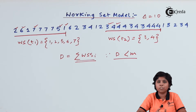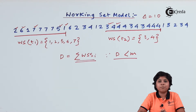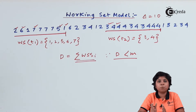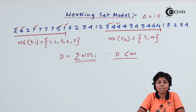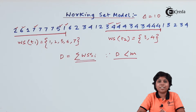The summation of working set sizes should not exceed the total number of frames available in the system; otherwise, thrashing will occur as more processes will need more frames. If the operating system detects this excess, a process will be suspended and swapped out to disk. The frames that were allocated to that suspended process are then given to the currently executing processes.